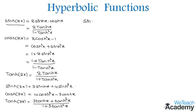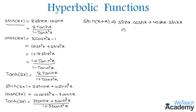Hyperbolic sin(2x) can be written as hyperbolic sin(x+x). By using the addition theorem formulas, we can write this as hyperbolic sin x into hyperbolic cos x plus hyperbolic cos x into hyperbolic sin x. By observing these are similar terms, so by adding them we get 2 hyperbolic sin x into hyperbolic cos x. In this way we proved this formula.